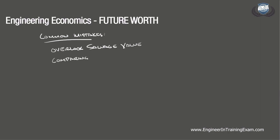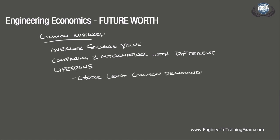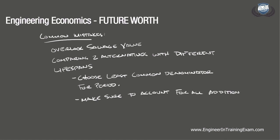Also, sometimes two alternatives are compared that have different lifespans. If this occurs and no analysis period is defined, we choose the least common multiple of the two lifespans to ensure we are comparing equivalent values based on the same period of time. The various costs and benefits must be accounted for in each of the added periods. For example, if machine A has a lifespan of three years and machine B has a lifespan of six years, we will have to account for the economic factors of machine A twice. So if the salvage value of machine A is $3,000 at the end of three years, then this same salvage value will also occur at the end of year six.